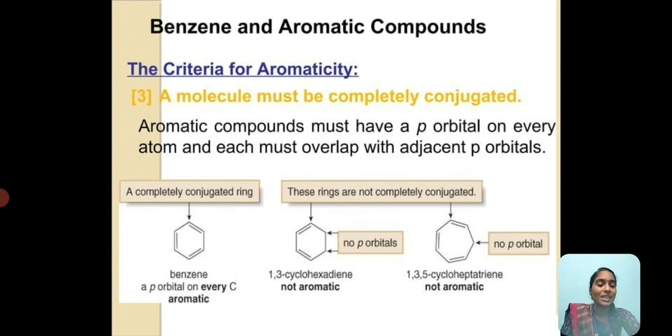A molecule must be completely conjugated, meaning aromatic compounds must have a p orbital on every atom, each overlapping with adjacent p orbitals. Completely conjugated pi bonds only give aromatic compounds; other configurations show non-aromatic compounds.